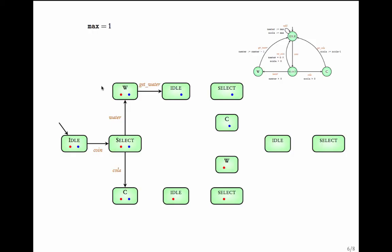In the transition system, we go from w to idle, but not to the idle state with n_water equal to 1 — we go to the idle state which has n_water equal to 0. Similarly, from cola, the transition to idle reduces n_cola by 1, so we go to a state where n_water is unchanged but n_cola is reduced by 1, specifically the idle state that has n_cola decremented by 1.